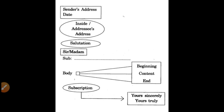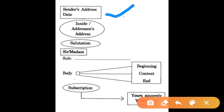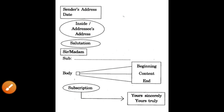Welcome back children. Let's study some common features of formal letters. As you can see in the picture, we have to follow the block format where everything begins from the left-hand margin. First of all, sender's address, then date, then address of the addressee, then salutation — sir or madam — then subject, then body, and at last the subscription, that is 'yours sincerely' or 'yours truly'.